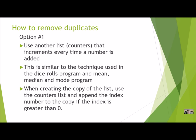I would need to make the counters list size 21 because I'm going to include zero. Then I'm going to count every time I get a random number — I would increment the counter at that index, just like you did for the dice rolls and mean, median, mode program. Then when you're creating a copy of the list, use the counters list and append the index number to the copy if the index value is greater than zero. If the counter remains zero, I don't need to add it to my list; if it's one or above, I just add that index once. That way I'm not actually removing duplicates — I'm just not including them more than once when I make a copy.